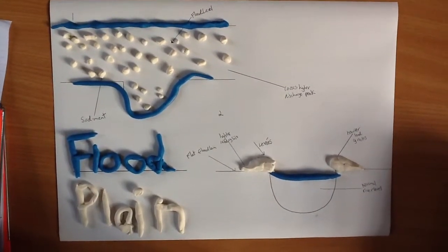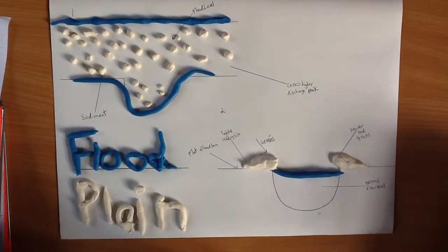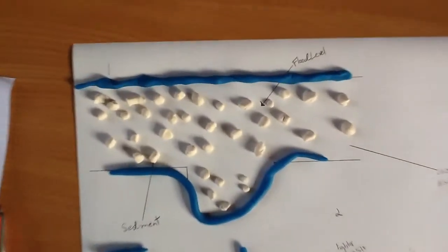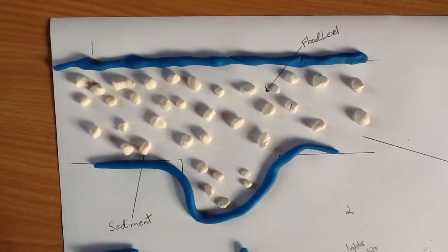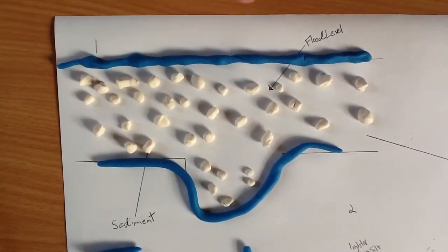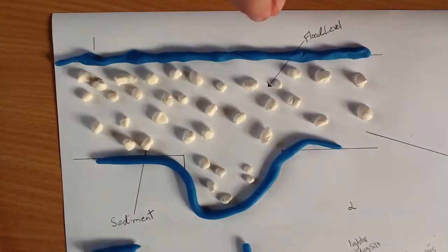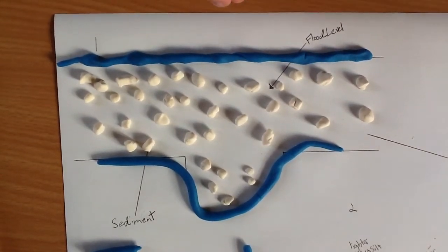Today we are doing flood plains. This diagram clearly shows it. The flood level here is more than the usual river level, causing sediment to be churned up.